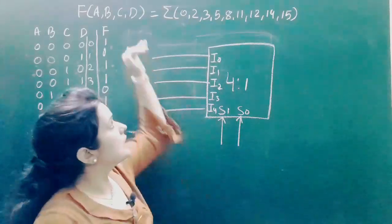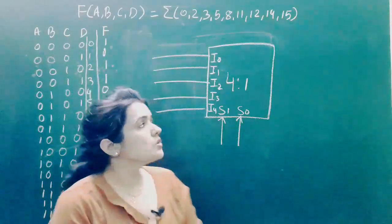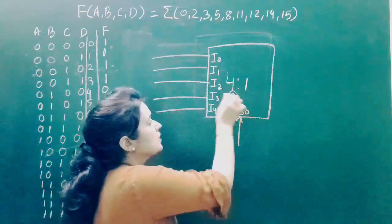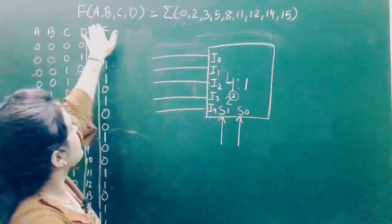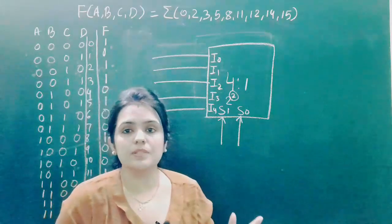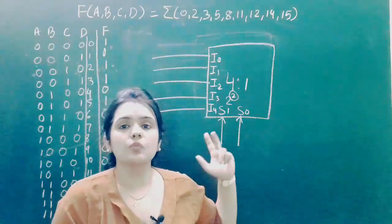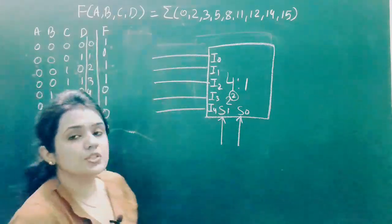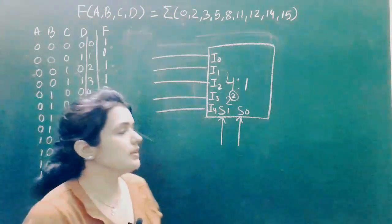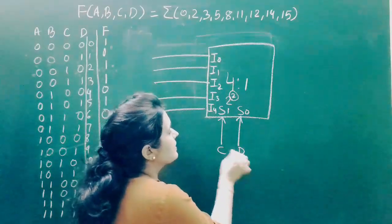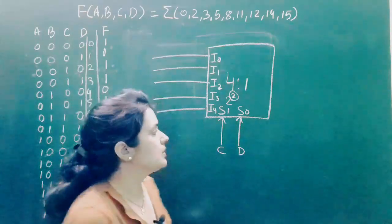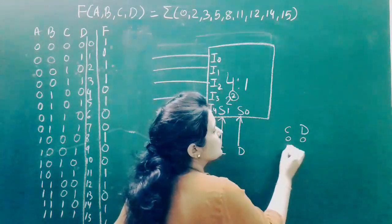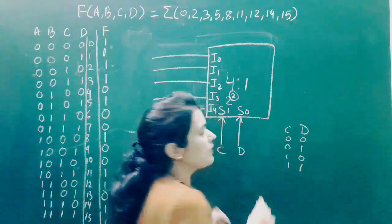Now suppose we have to implement the same Boolean function using a 4-to-1 multiplexer. Since 4 = 2^2, the number of selection lines is 2. But we have 4 variables, so we choose 2 of them as selection lines. Let's take C and D as selection lines. The possible values of C and D are 00, 01, 10, and 11.